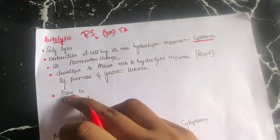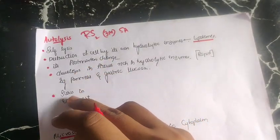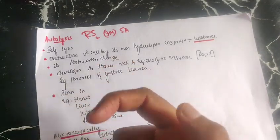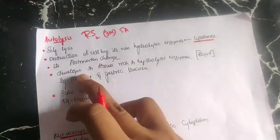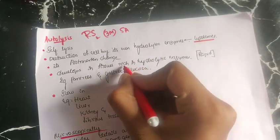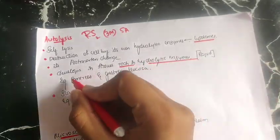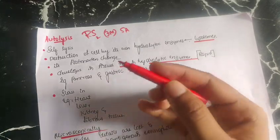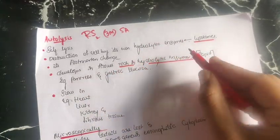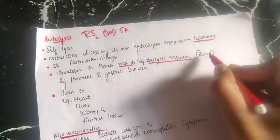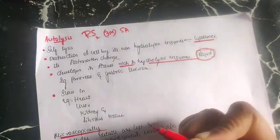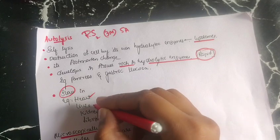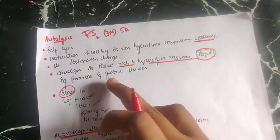In acute pancreatitis, enzymes leak from the acinar cells and destroy the tissue itself. The organs rich in hydrolytic enzymes are the pancreas and gastric mucosa — these sites have more hydrolytic enzymes, so autolysis occurs rapidly in them.